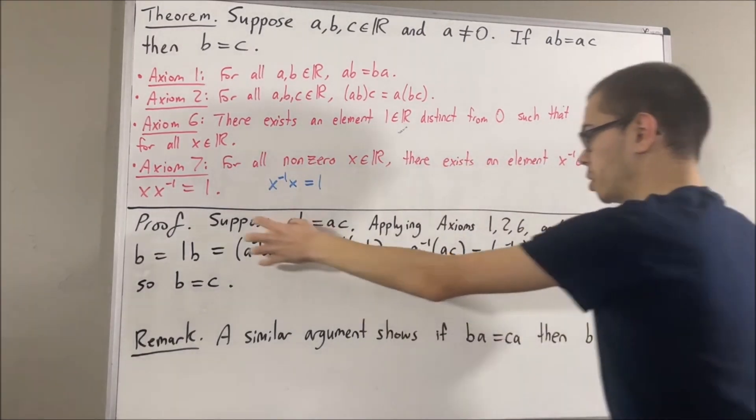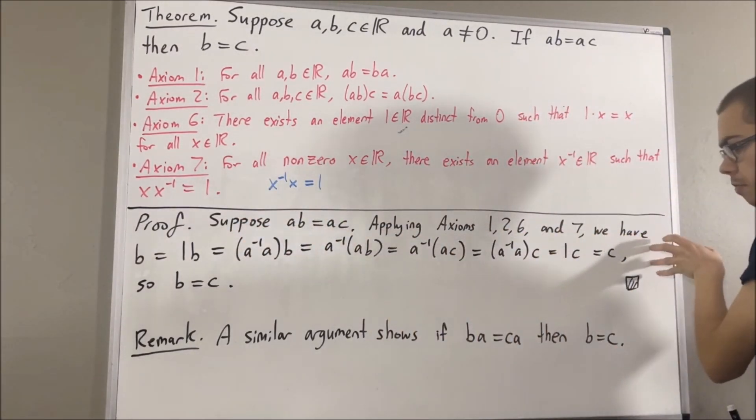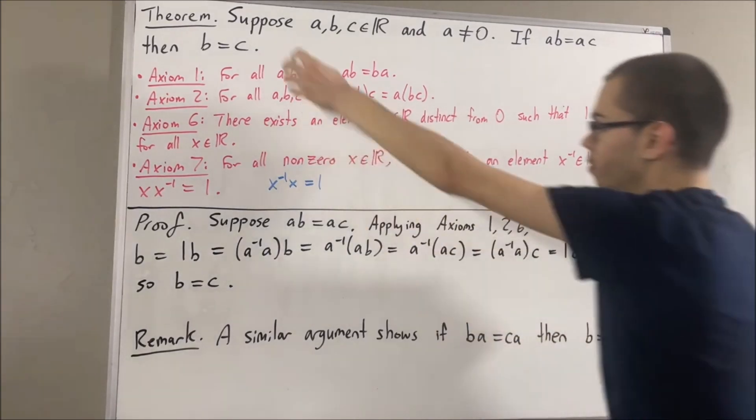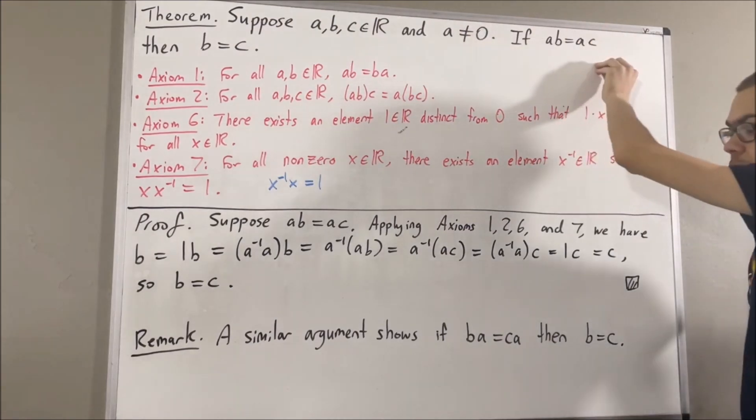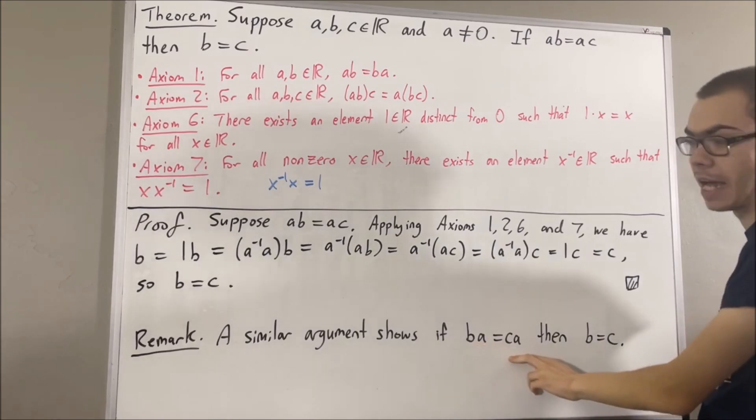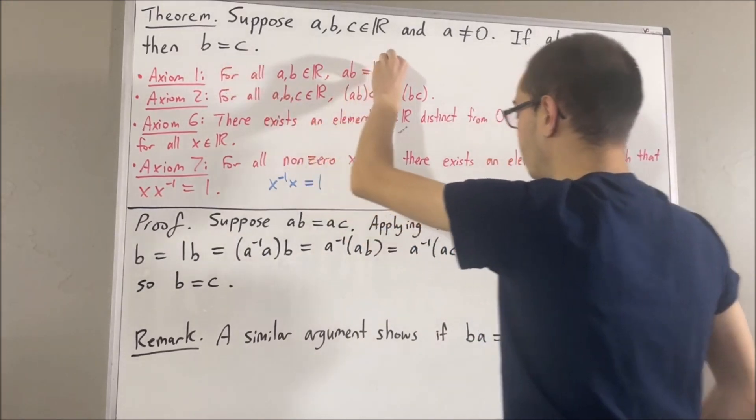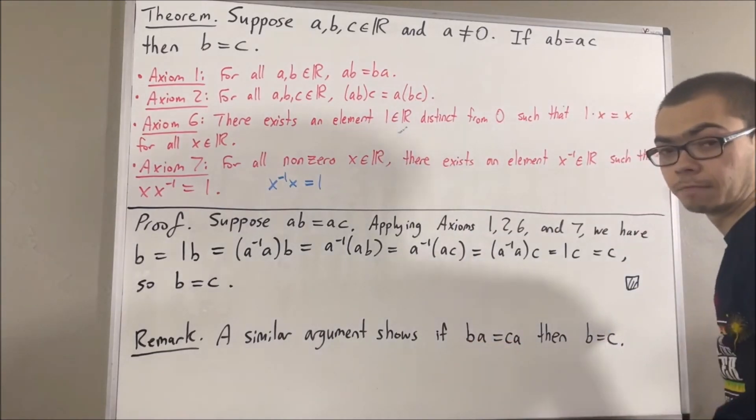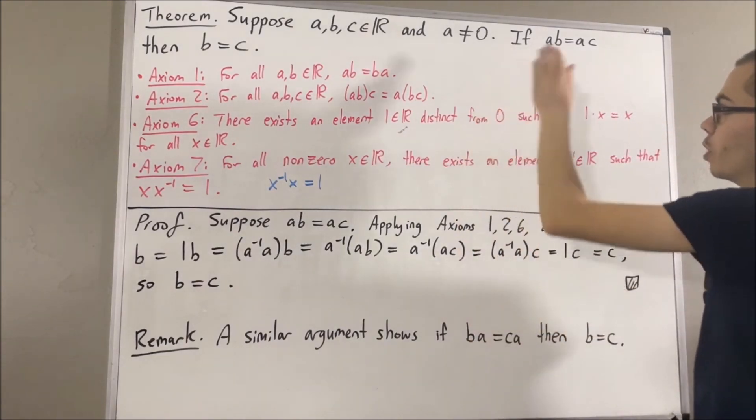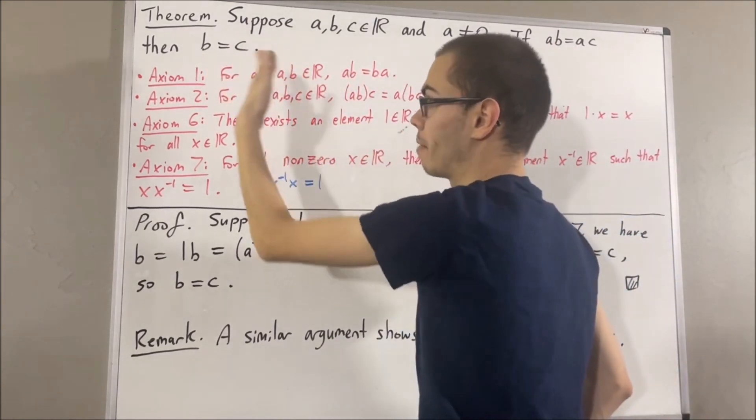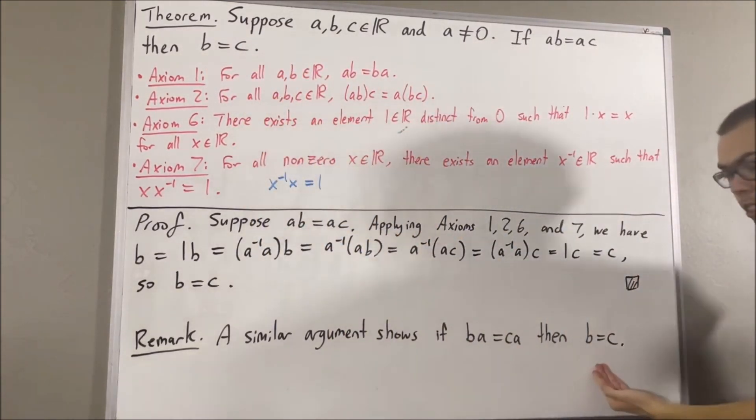You can apply the same sort of argument that we did above to prove this. Alternatively, you could use the theorem that we just proved in order to prove this. Because, if you suppose BA is equal to CA, then by axiom 1, we can flip these guys around. We have AB is equal to AC. But, we have just proven if AB is equal to AC, then B is equal to C. So, that implies B is equal to C, which is exactly what we want.